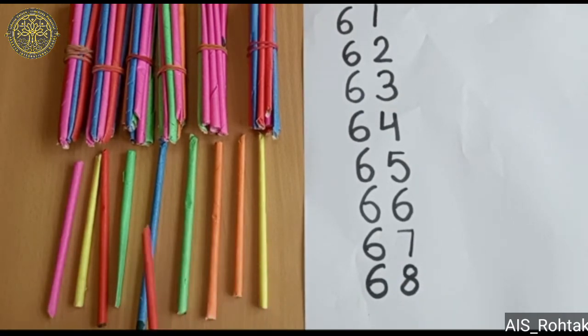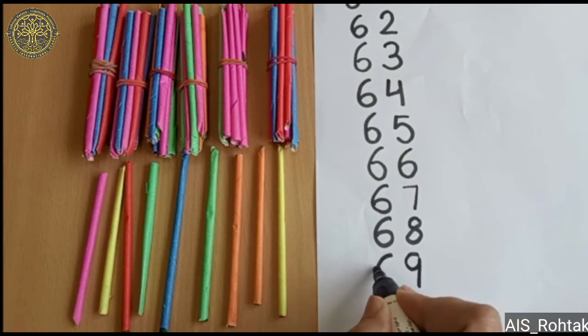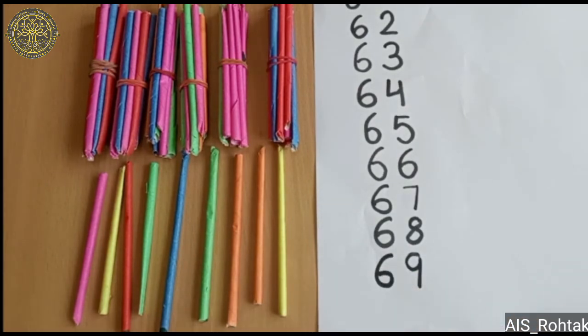1, 2, 3, 4, 5, 6, 7, 8, 9. So I can write 9 ones and 6 tens. 69.